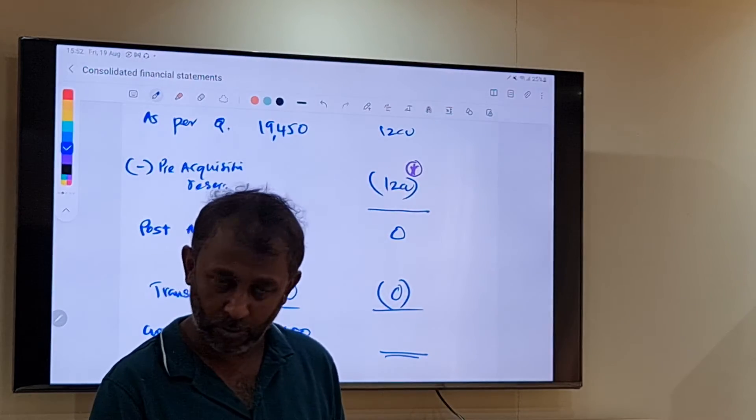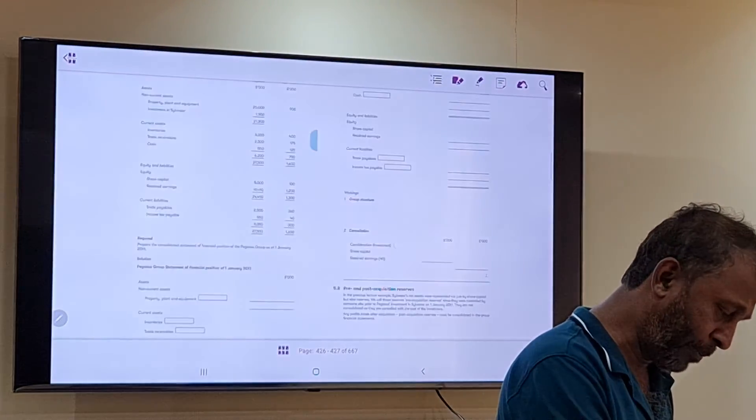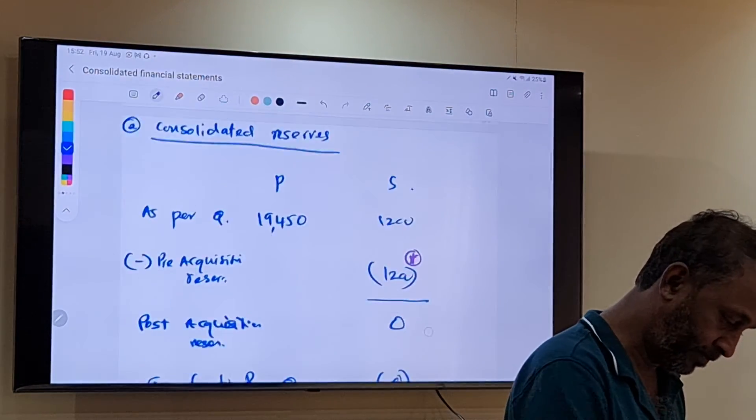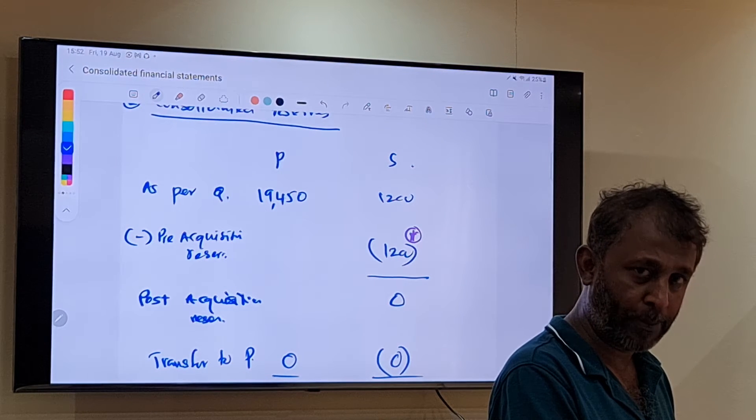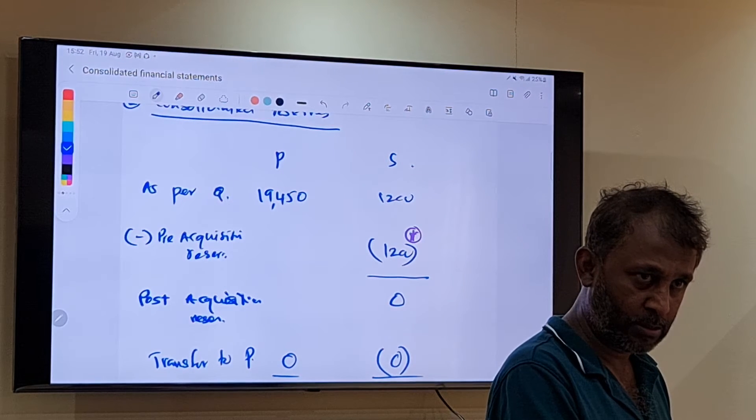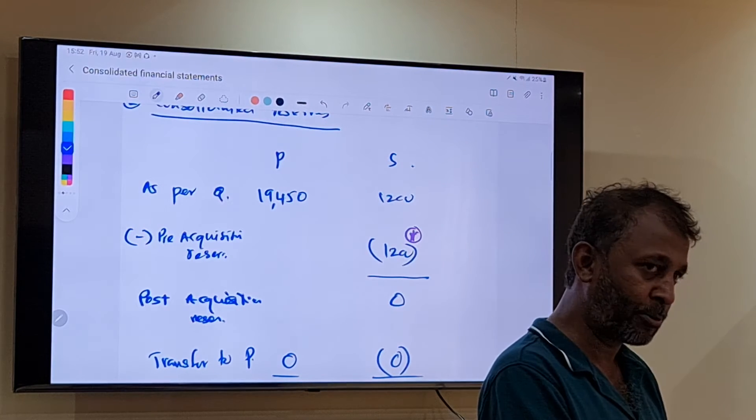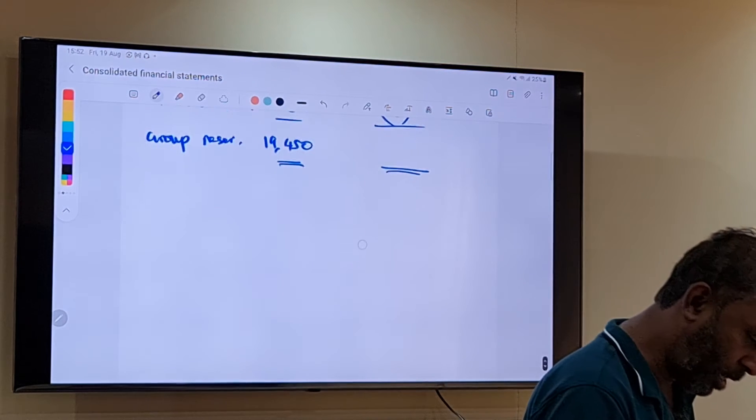Clear. After finishing this, now we go to balance sheet again. Now we can prepare the balance sheet. So any doubt in this before I go to prepare the balance sheet? In this example, there are only two workings, but there are other steps that will come when you view further discussions.